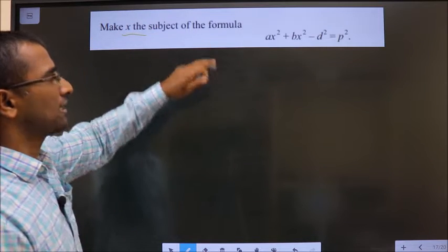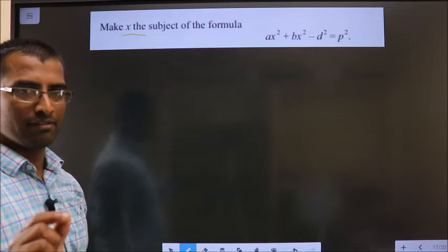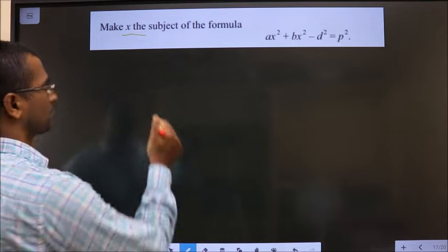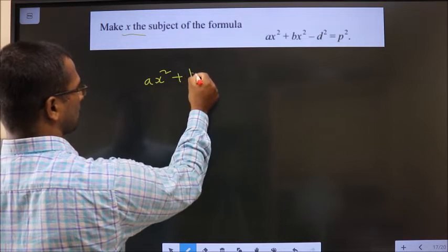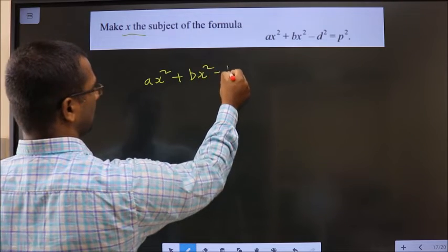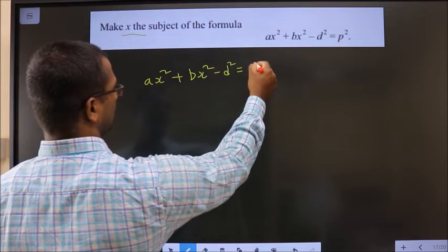Make x the subject of the formula. Given equation is ax square plus bx square minus d square equals p square.